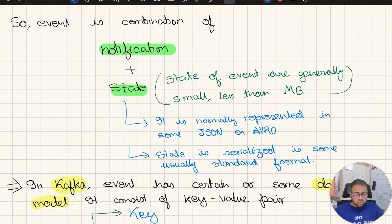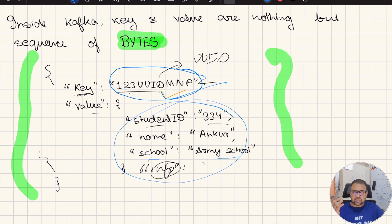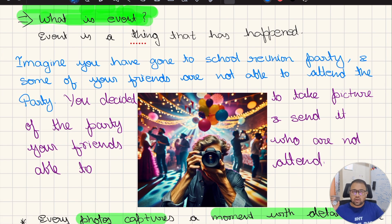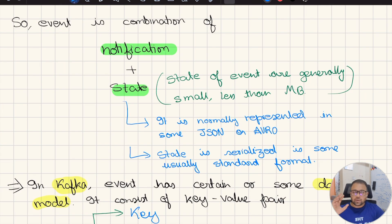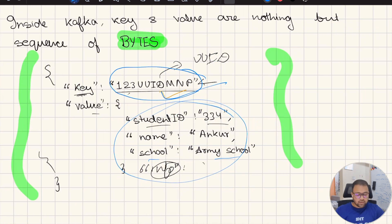If you try to replicate this with our earlier example — instead of sending data to Google Photos, if you want to send this data to Apache Kafka, there will be some key, and in the value you will store the information. You might convert your image to base64, then you will have the base64 image address, the image ID, and the description of the image. So this becomes one of your events. I hope now you understand what is an event in Apache Kafka.